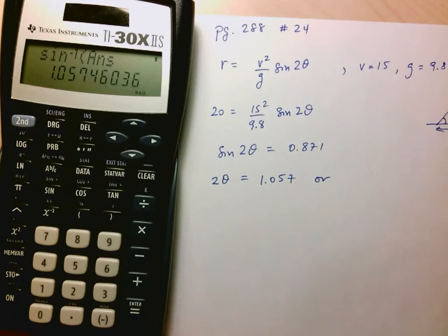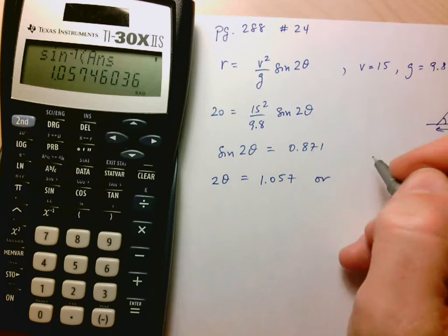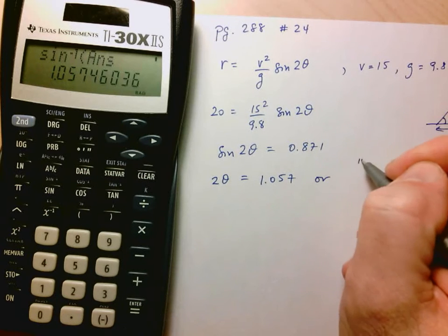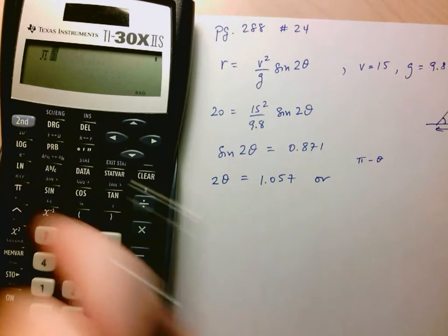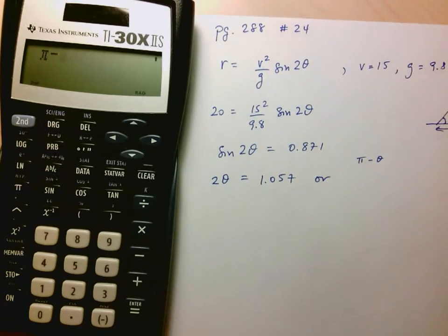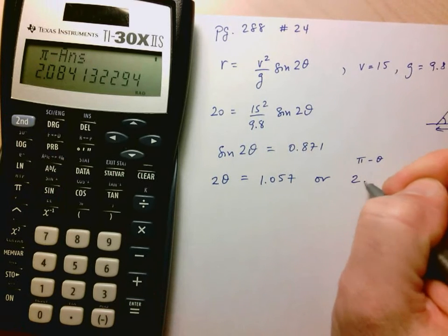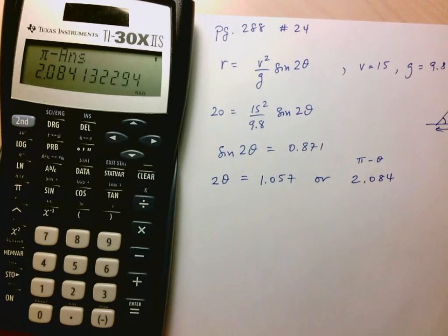We can get our second answer using our related acute angle identity, which here is pi minus theta. In other words, pi minus 1.057, and we get 2.084.